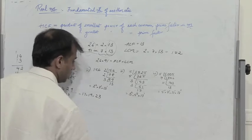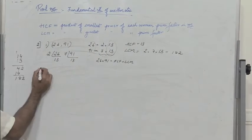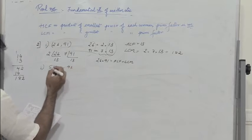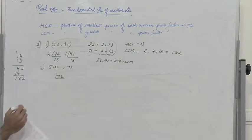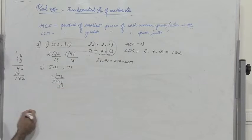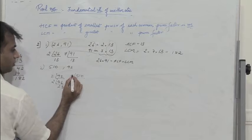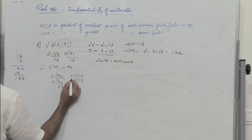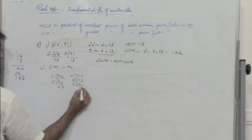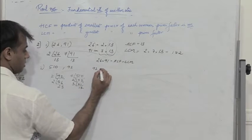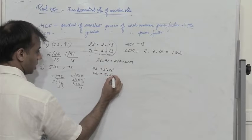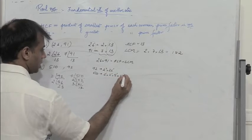Now let's find the HCF and LCM of 510 and 92. For 92: dividing by 2 gives 46, by 2 again gives 23. So 92 = 2² × 23¹. For 510: dividing by 5 gives 102, by 2 gives 51, by 3 gives 17. So 510 = 2¹ × 3¹ × 5¹ × 17¹.